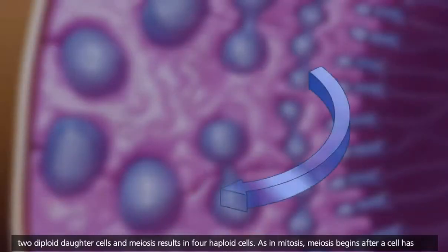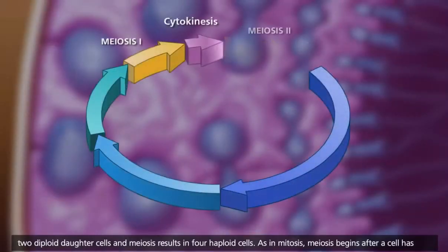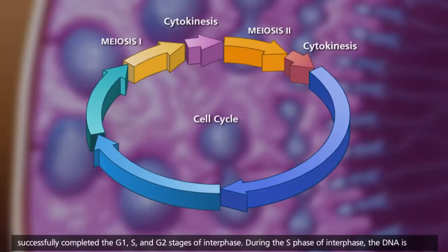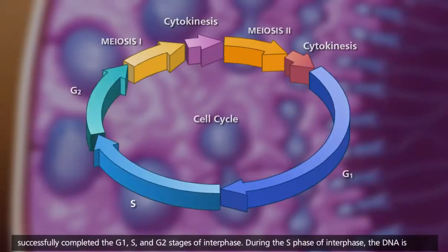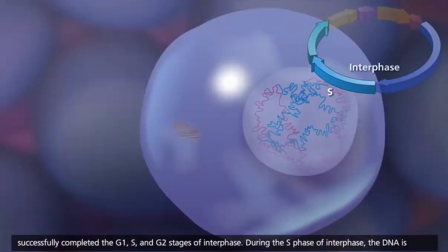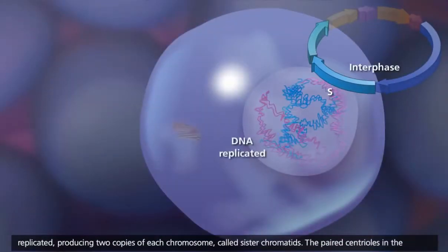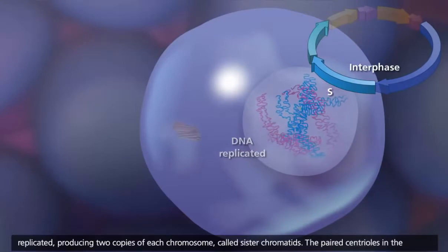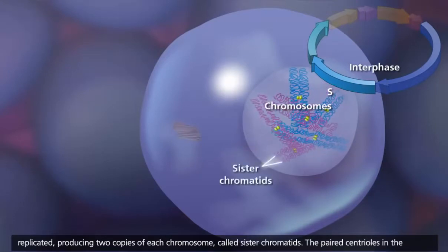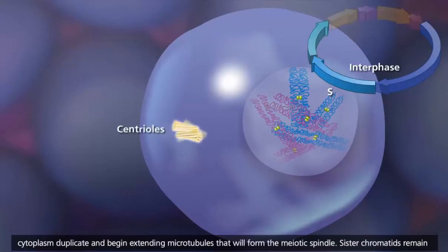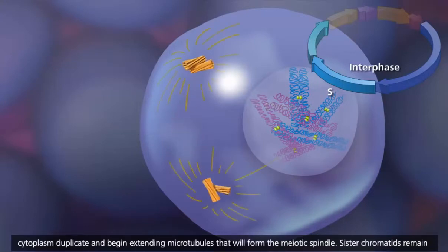As in mitosis, meiosis begins after a cell has successfully completed the G1, S, and G2 stages of interphase. During the S phase of interphase, the DNA is replicated, producing two copies of each chromosome called sister chromatids. The paired centrioles in the cytoplasm duplicate and begin extending microtubules that will form the meiotic spindle.